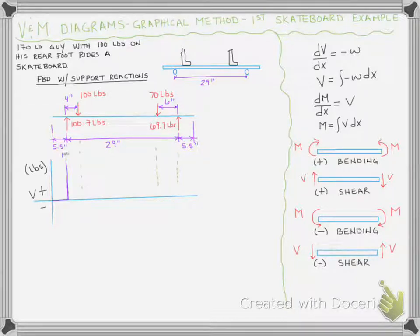We have no change in the loading for the next six inches so we can just go straight across. But then we hit our 100 pounds going down and that's going to drop us straight down to about 0.7. Then we have constant load of zero so we'll have a constant shear until we hit the negative 70 pounds down, and so we'll drop down by negative 70 which gets us to negative 69.7.